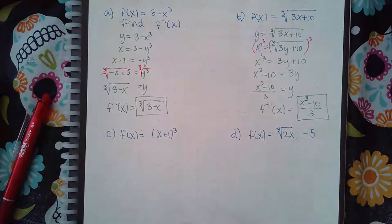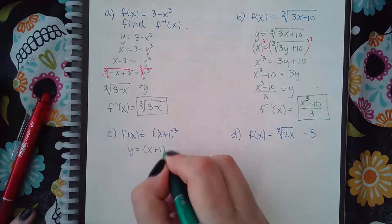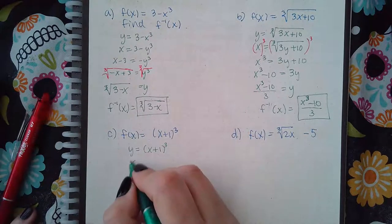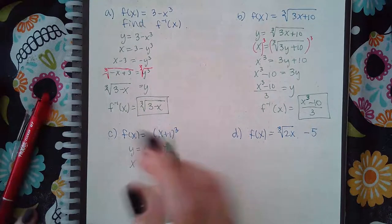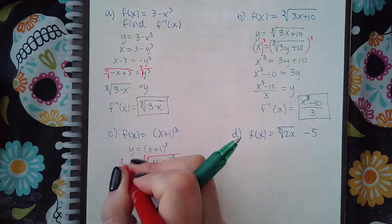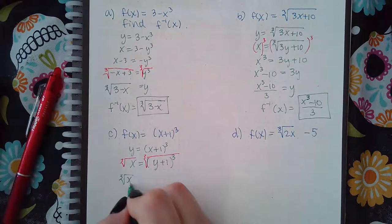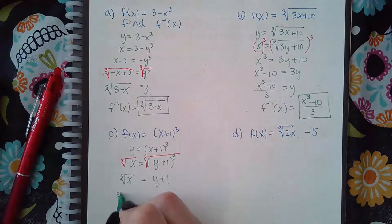Then for this problem, same thing. Change this to y, interchange the x and the y's, get the y by itself by taking the cube root of both sides. So I get the cube root of x equals y plus 1, and then minus 1.